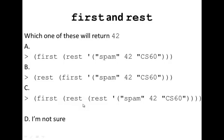Here's a quiz question to try on your own. The answer is: What we'll do is we'll take the rest of this list, which removes the first, and then we take the first of the list that's remaining, and that will return 42.